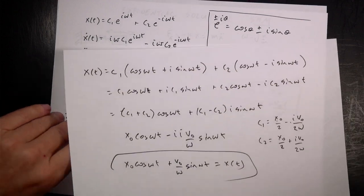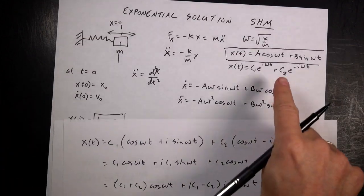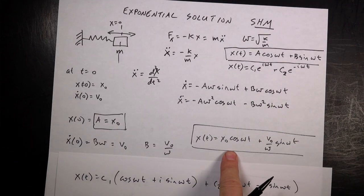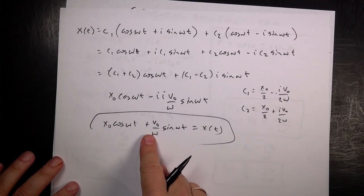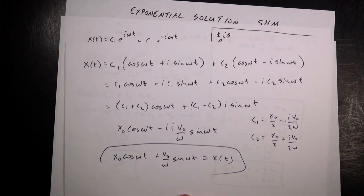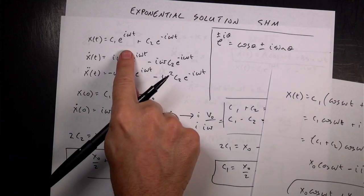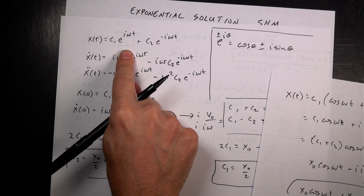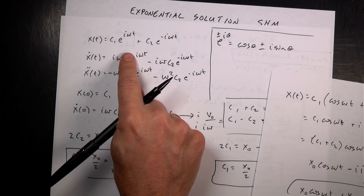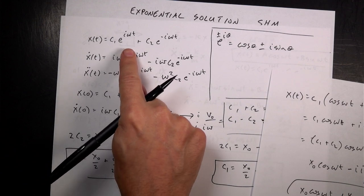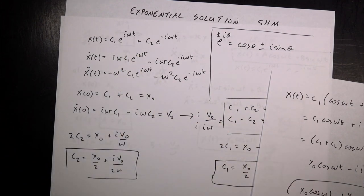That's the same thing as the trig solution — so the two solutions are indeed identical. The nice thing is now you can graph it easily using sines and cosines. Someone might ask why bother with the exponential solution at all. The answer is that for damped or driven harmonic oscillators, the exponential solutions work much better than sines and cosines, but they're hard to plot directly — so you have to switch over. Hope you found that useful.